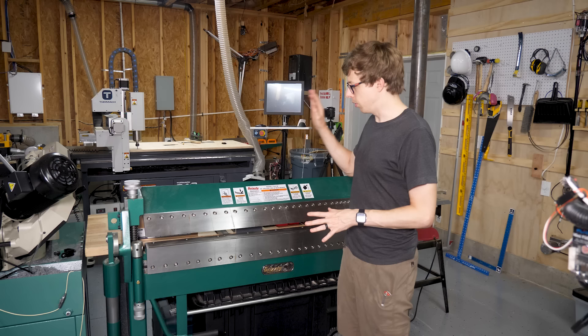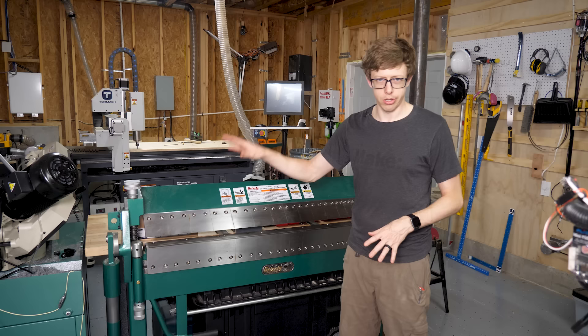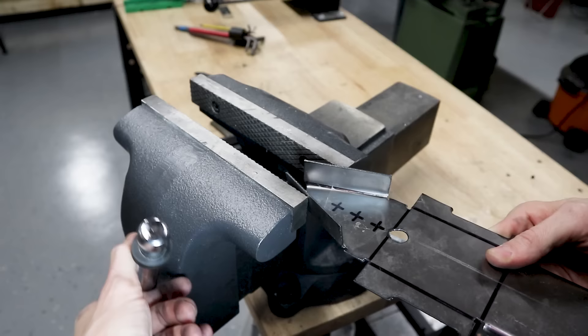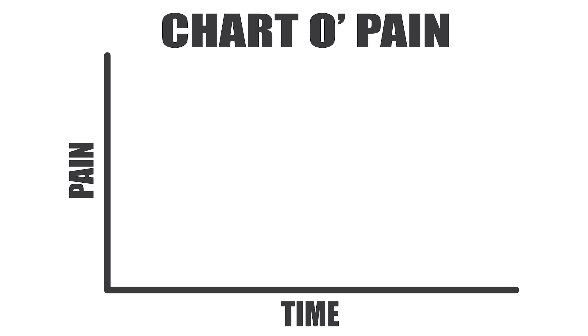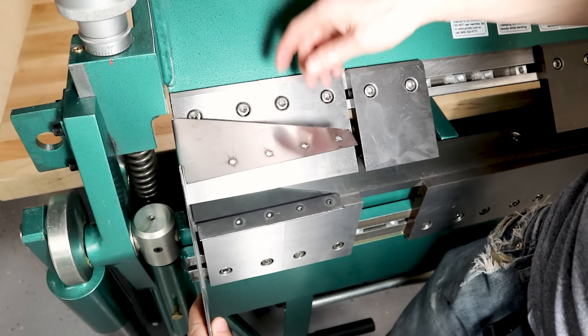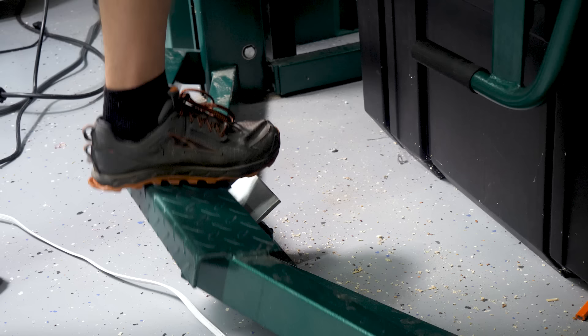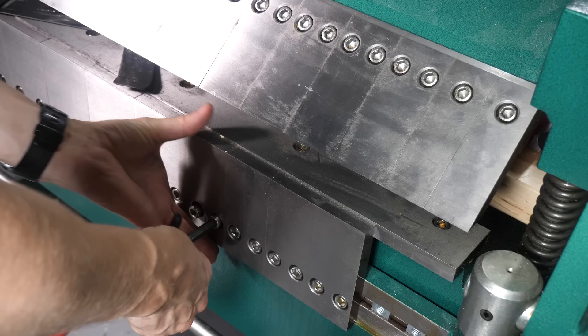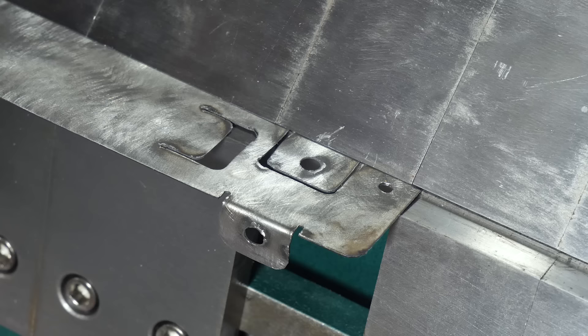Bending sheet metal accurately is really hard to do, which is why I have such a ridiculous bender. The technical term for this is a brake and it's made by Grizzly. It'll do 16 gauge steel up to 50 inches wide. And this thing is phenomenal. The amount of pain I went through before I got this thing is just off the charts. You take whatever it is you want to bend and clamp it in the brake, and then pull this pivoting part up to whatever bend angle you want. You can also take these fingers out to make clearance for bends that you couldn't make otherwise.